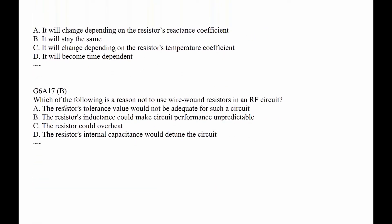G6A17. Which of the following is a reason not to use wire-wound resistors in an RF circuit? Well, they have inductance — so the answer is B. The resistor's inductance could make the circuit perform unpredictably. It could also make it not perform at all. It adds inductance, and that's the answer.